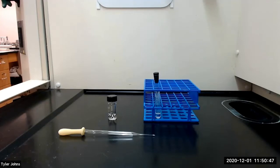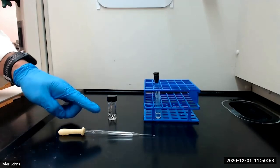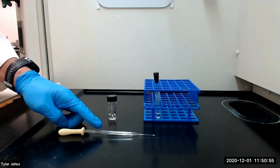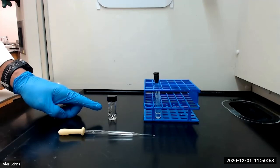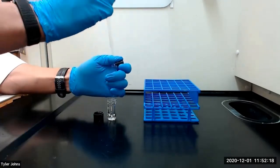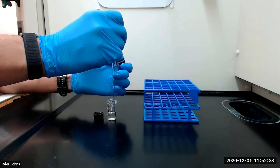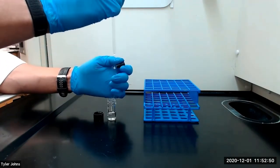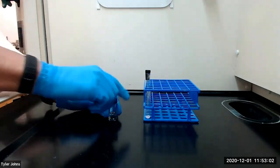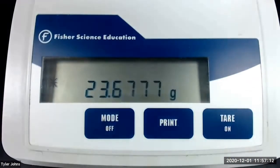After drying for 15 minutes, we will next transfer the 4-methyl cyclohexene to the pre-weighed 3-milliliter conical vial using a filter tip pipette. We will then determine the mass of the pre-weighed 3-milliliter conical vial plus the 4-methyl cyclohexene. The mass of the pre-weighed 3-milliliter conical vial plus the 4-methyl cyclohexene is 23.6777 grams.